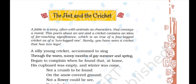So before the poem starts, it has been noted that this poem is a story about an ant and a cricket, and it contains an idea of far-reaching significance. That means the idea is long-term, which is quite far-reaching and significant.